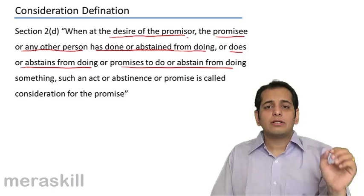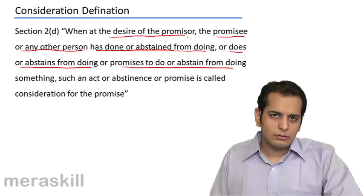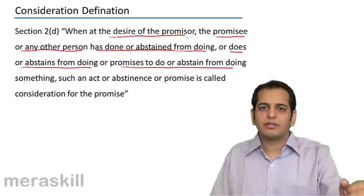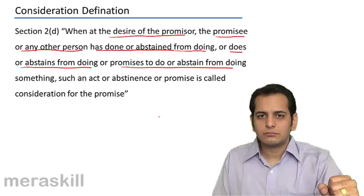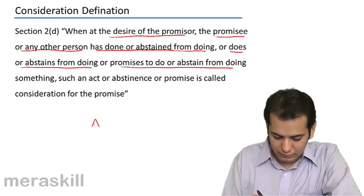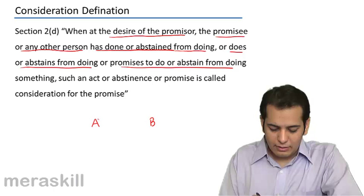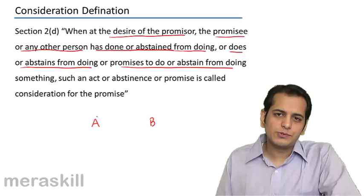Let's start from the beginning: when at the desire of the promiser. Please understand that in every contract there are two parties — one gives something, the other gets something. Now let's take an example. A and B enter into a contract wherein A will buy a shirt from B and pay 1000 rupees against it.